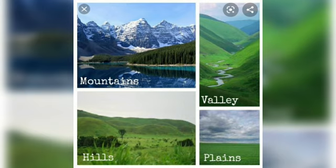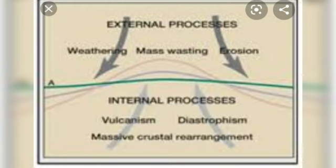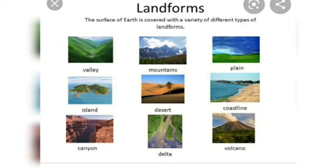These landforms are formed because of internal and external processes. The external processes include weathering, mass wasting, and erosion. Internal processes may be caused by earthquakes, volcanoes, or the movement of tectonic plates. These movements give us the various kinds of landforms — valleys, mountains, plains, deserts, deltas, volcanoes, or islands.